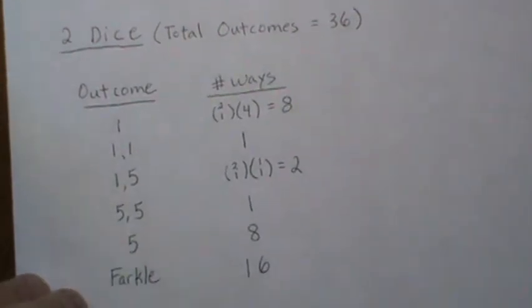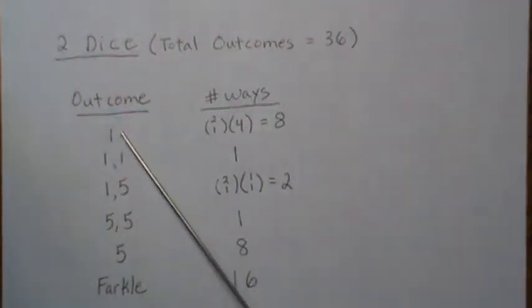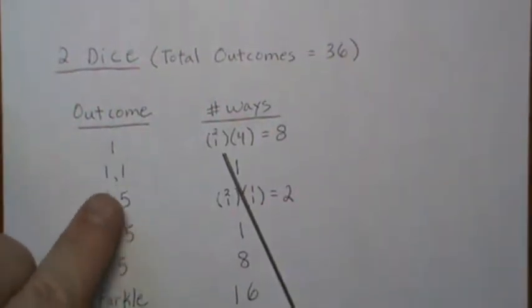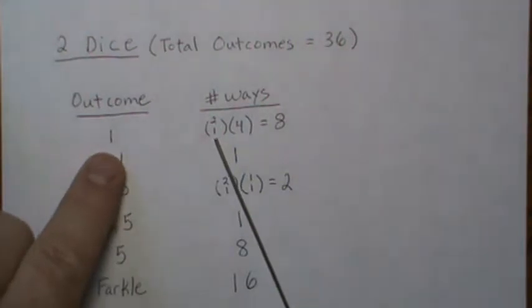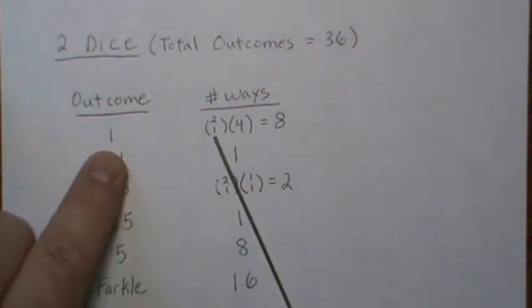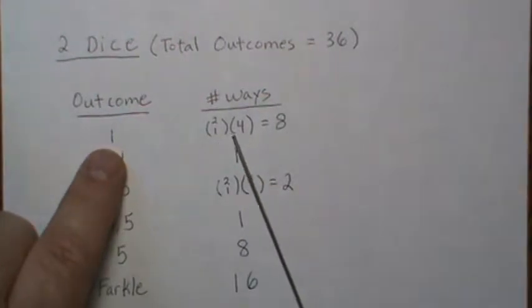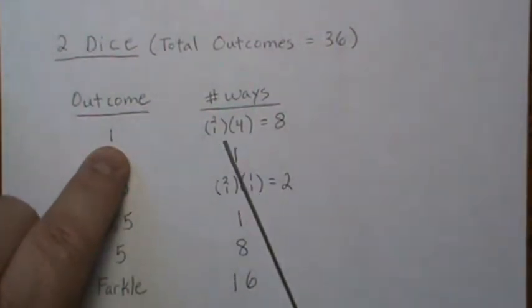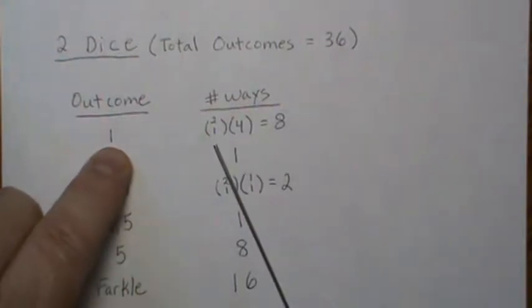When there are two dice, there are 36 total outcomes. The possible ways to score are: you roll exactly one one, two ones, a one and a five, a five and a five, or exactly one five. The number of ways to roll exactly one one — of the two dice, pick one, and there's one way to roll a one, and then there are four ways to roll the second die and not score, because the one and five can't happen.